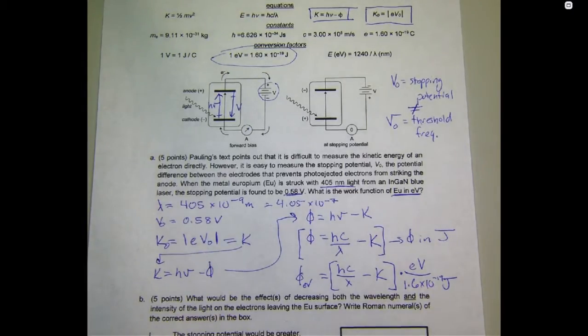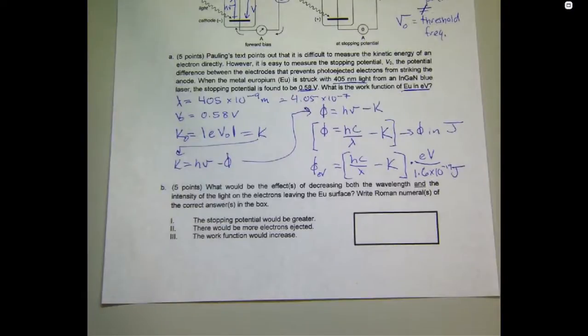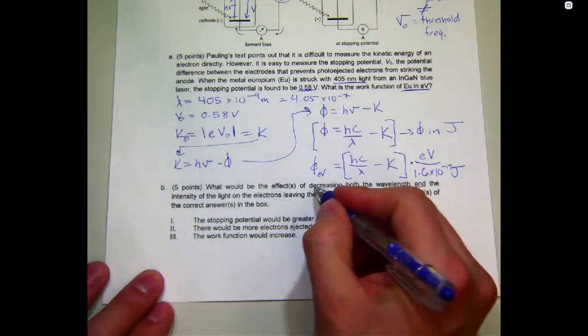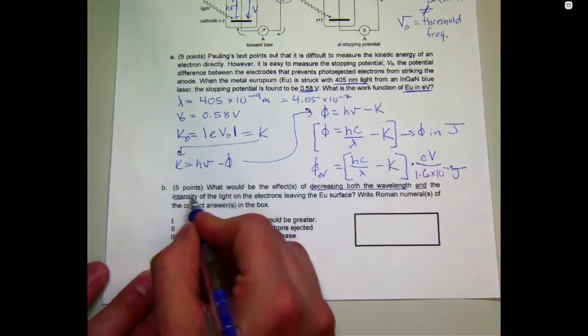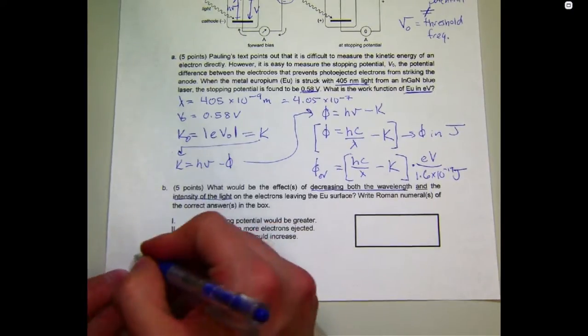All right, so, even though this was the complicated quote-unquote math problem, actually, more people got points on this problem than they did on the second part of the problem, which was the more conceptual aspect. So, let's take a look at this question. What would be the effects of decreasing the wavelength and decreasing the intensity of the light? So, let's go ahead and write that down in this experiment.